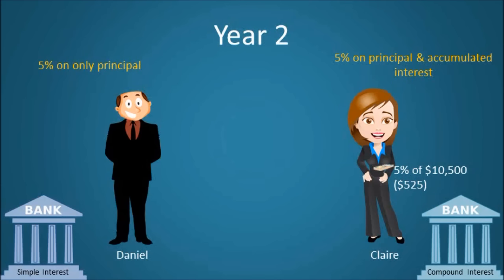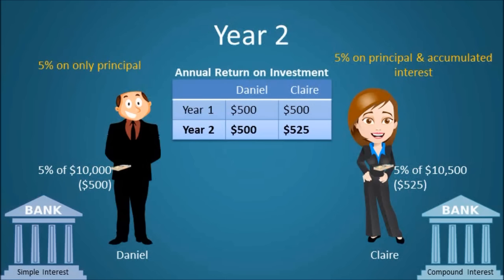With this in mind, Claire will earn $525 in year two, bringing her total capital to $11,025. Meanwhile, Daniel will earn only $500 in year two, bringing his total capital to $11,000. So after year two, Claire has made $25 more than Daniel, all without lifting a finger.